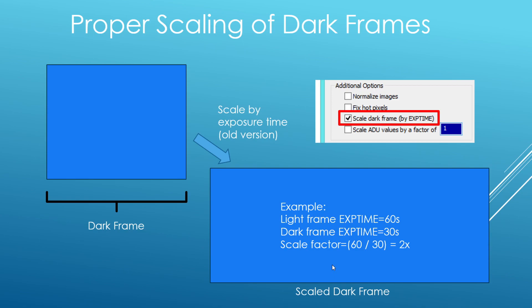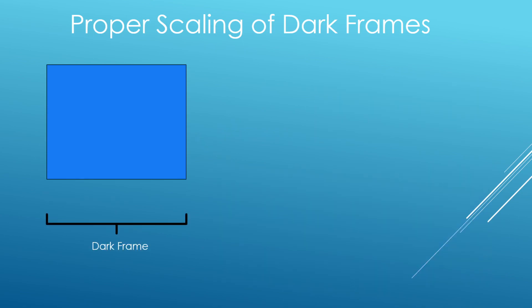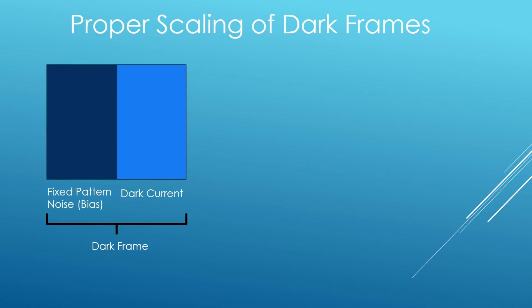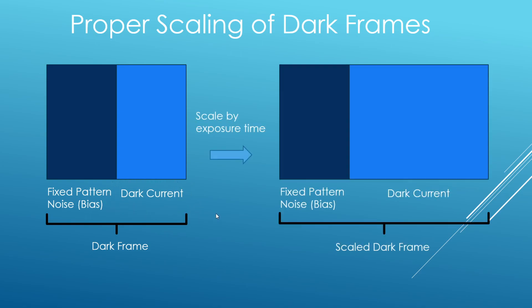The new version is a little bit more intelligent because you are now able to supply a bias frame, also referred to as the fixed pattern noise. In this case it's able to treat that independently of the actual dark current. So whenever it does a scaling routine, it is going to leave that fixed pattern noise alone and scale only the dark current. And that is how it is supposed to work, and that is how it works now in this new version.